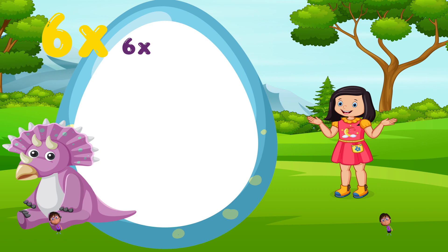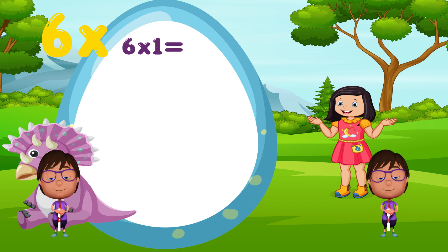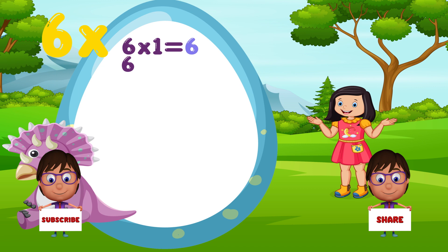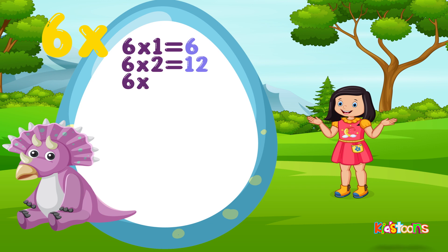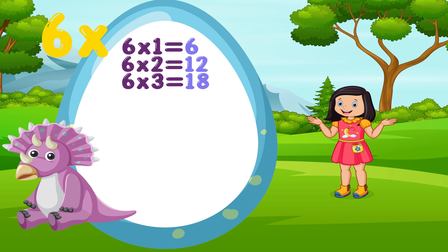6 times 1 is equal to 6. 6 times 2 is equal to 12. 6 times 3 is equal to 18. 6 times 4 is equal to 24. 6 times 5 is equal to 30.